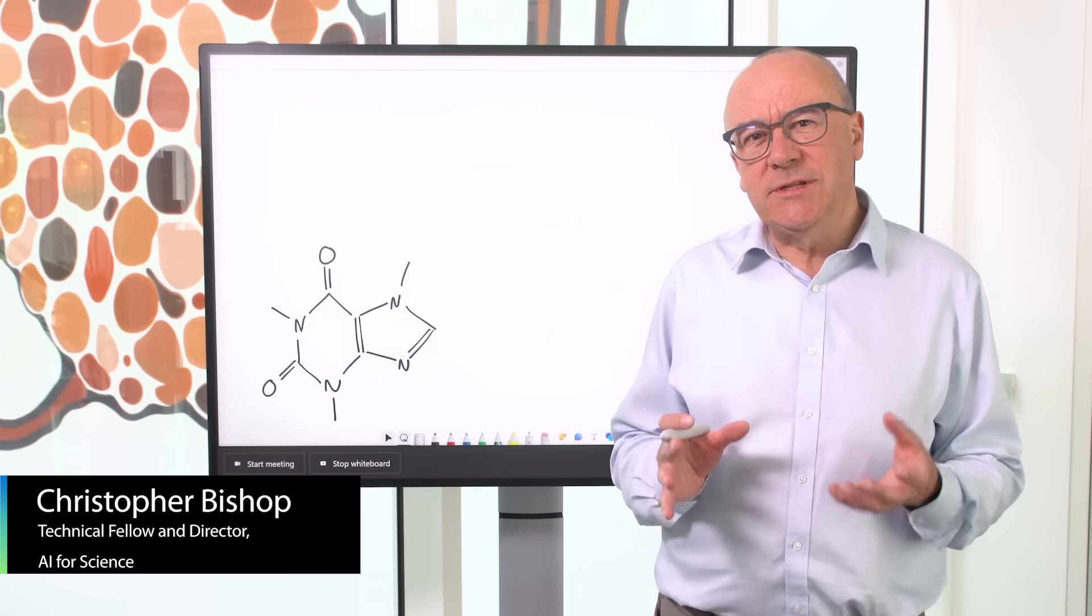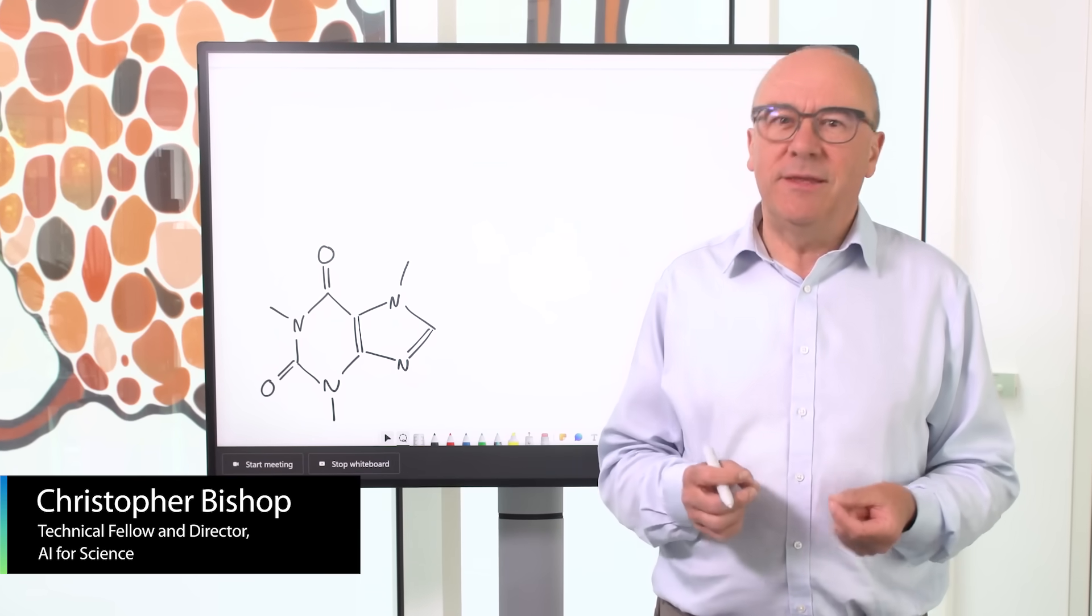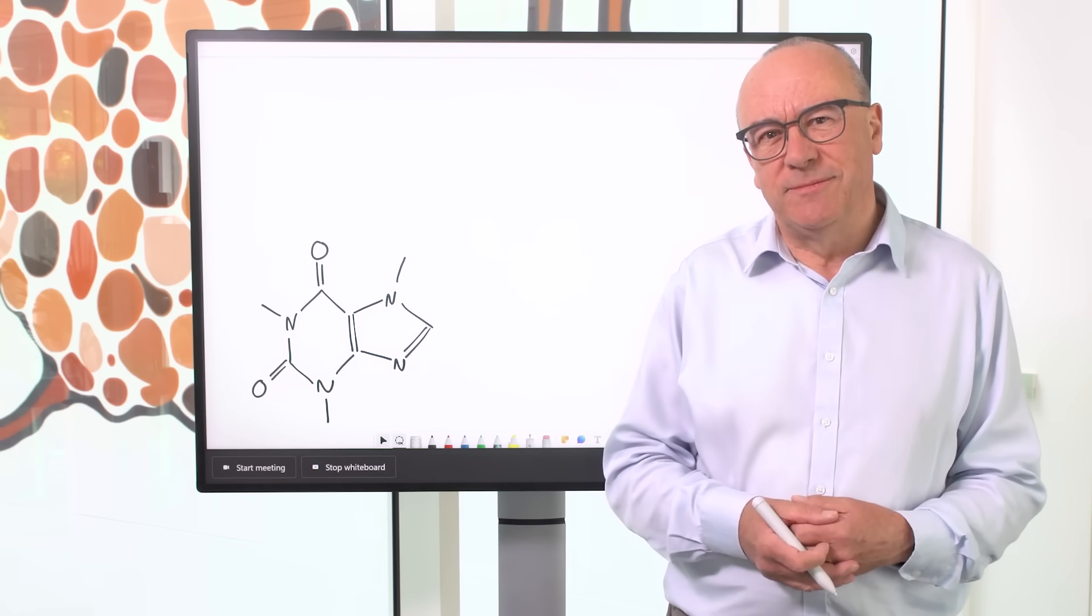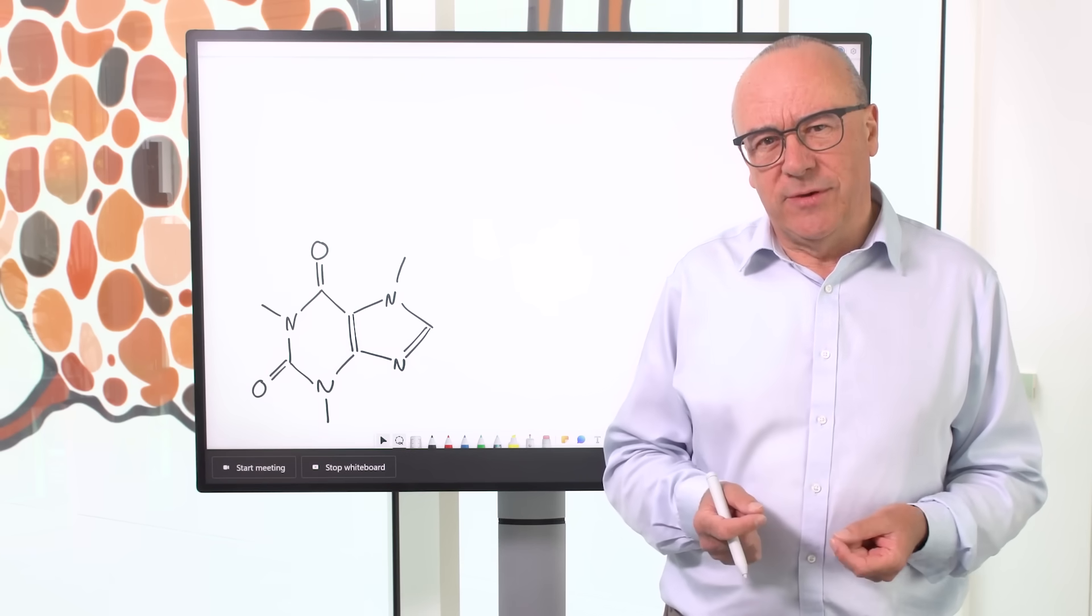A hundred years ago, physicists discovered that the properties of matter at the molecular level can be described very precisely by the equations of quantum physics. Now, perhaps the best known of these is Schrödinger's equation. Although Schrödinger's equation is easy to formulate, solving it turns out to be extremely difficult.